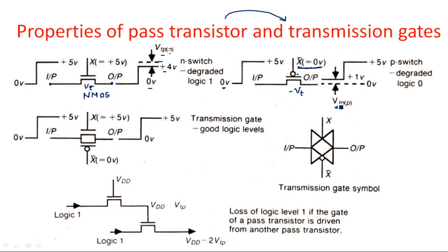For the PMOS transistor, logic 0 is degraded — we don't get a clean 0V but instead get around 1V minimum. However, logic high is a full +5V. So comparing: the NMOS transistor produces degraded logic 1, and the PMOS transistor produces degraded logic 0. If we combine them, we could achieve a full logic swing from 0 to 5V completely.